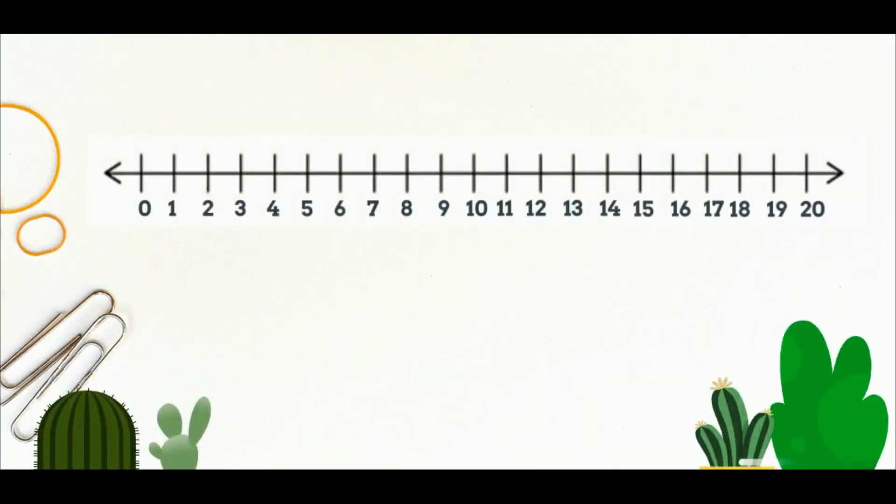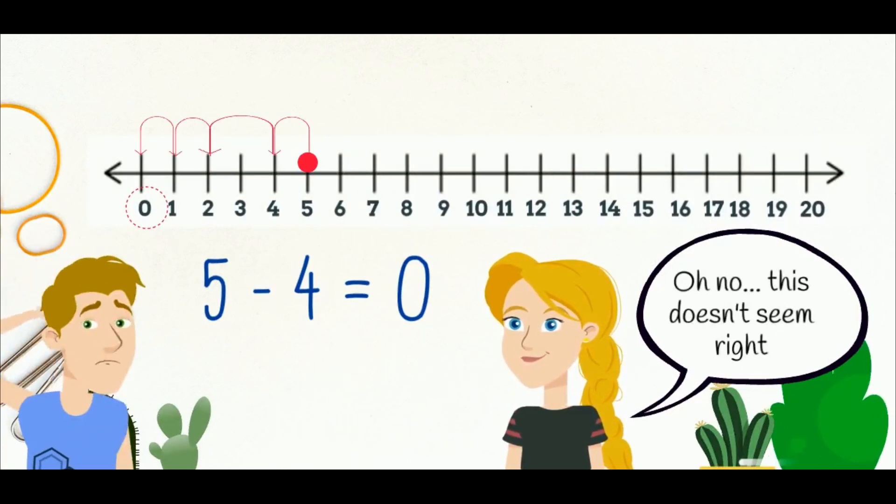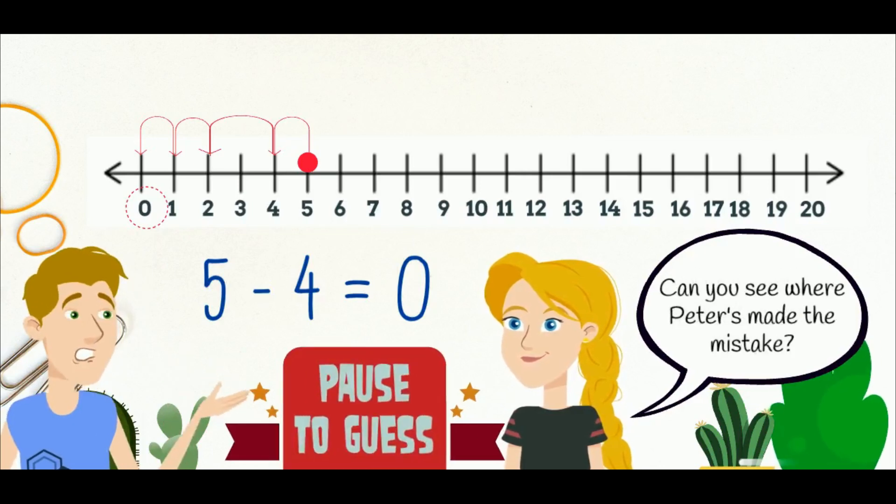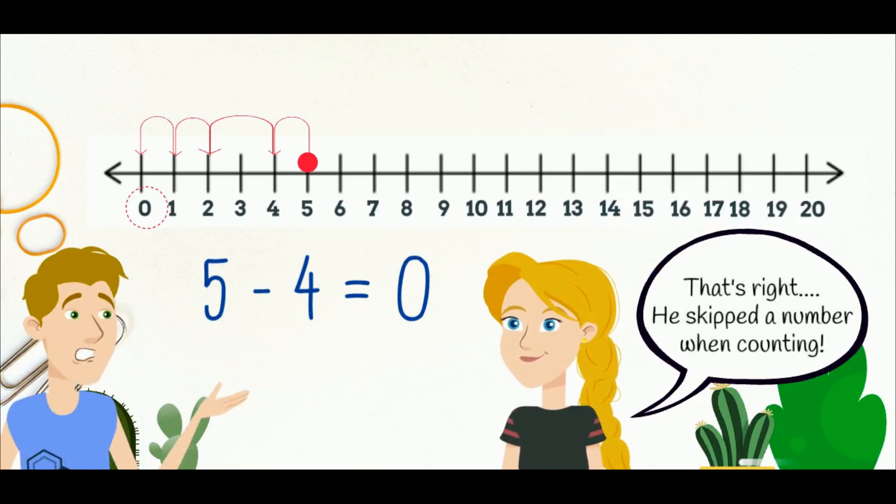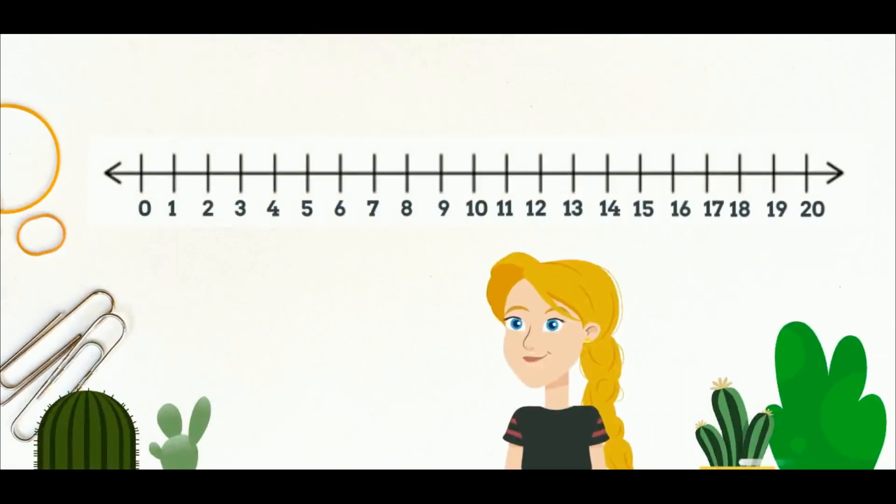Let's go over to Peter and see how he's doing. Five take away four equals zero. Oh no, this doesn't seem right. Can you see what Peter's done wrong? That's right, he skipped a number when counting. You need to make sure that you make one jump for every count.